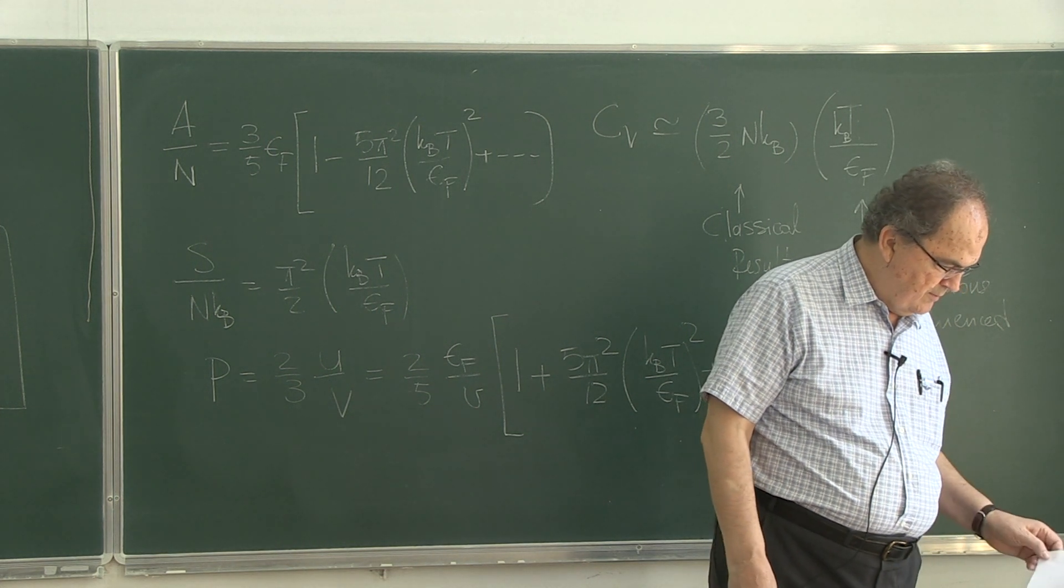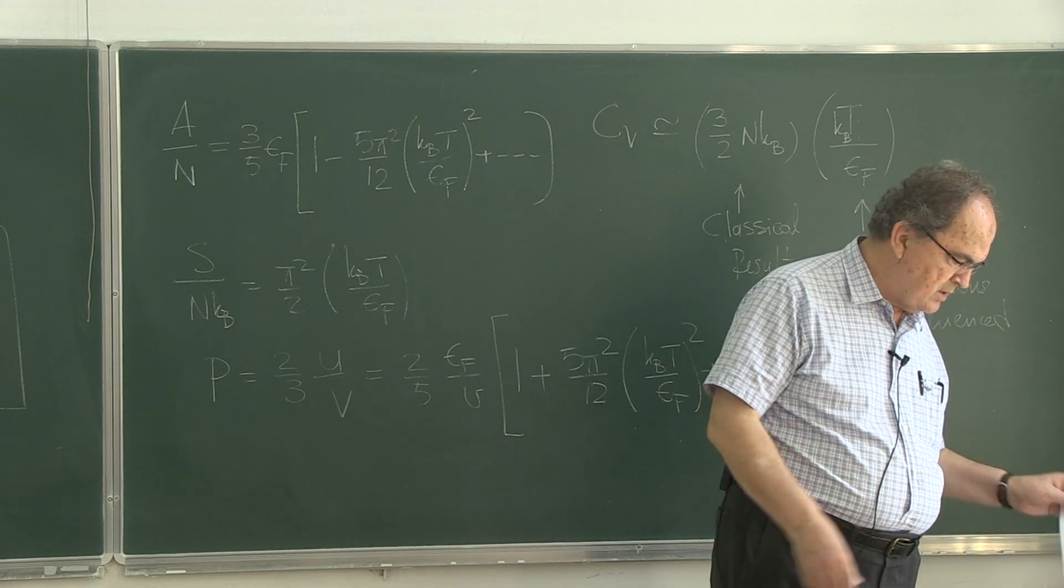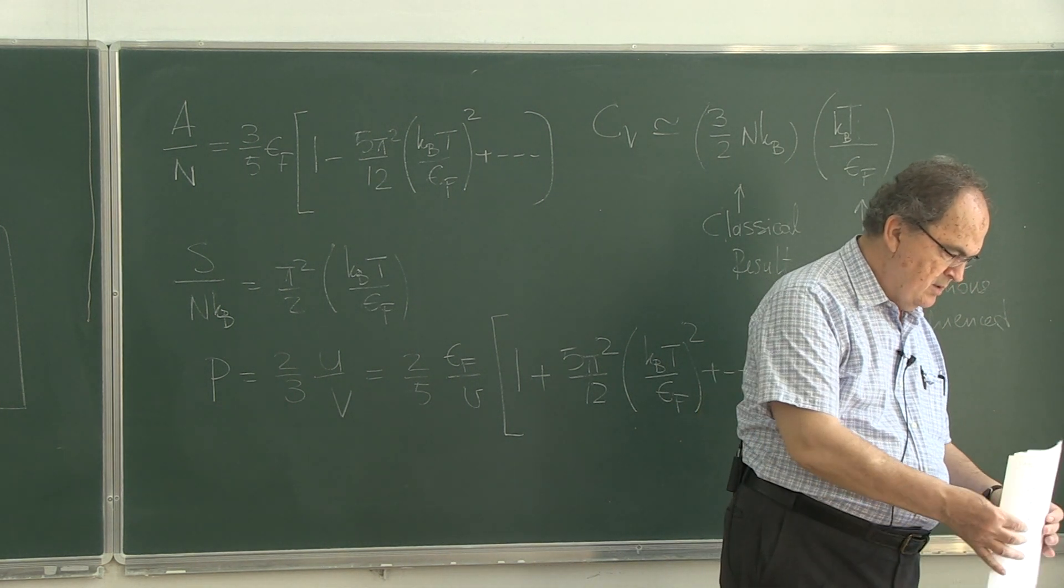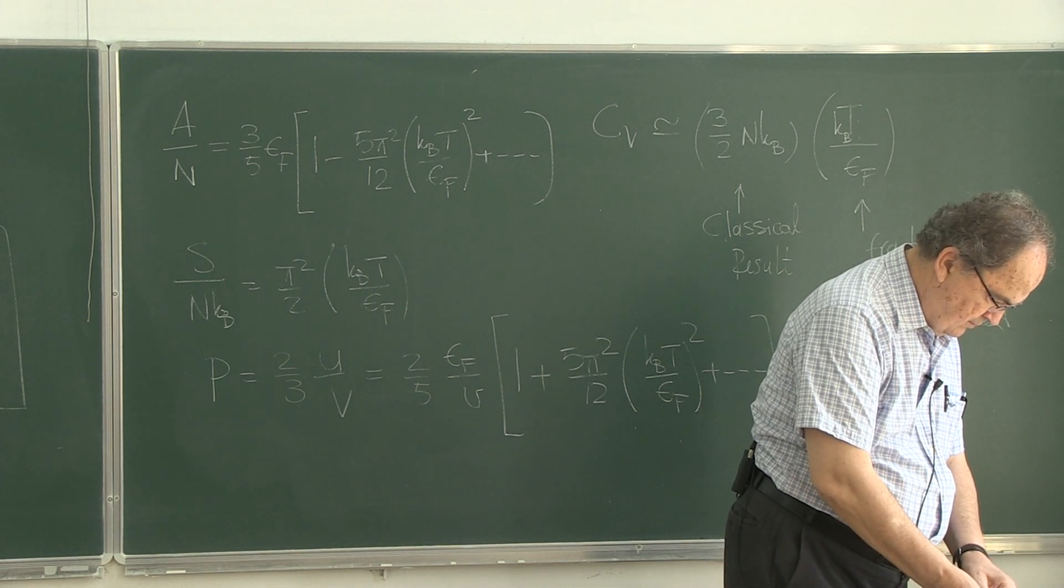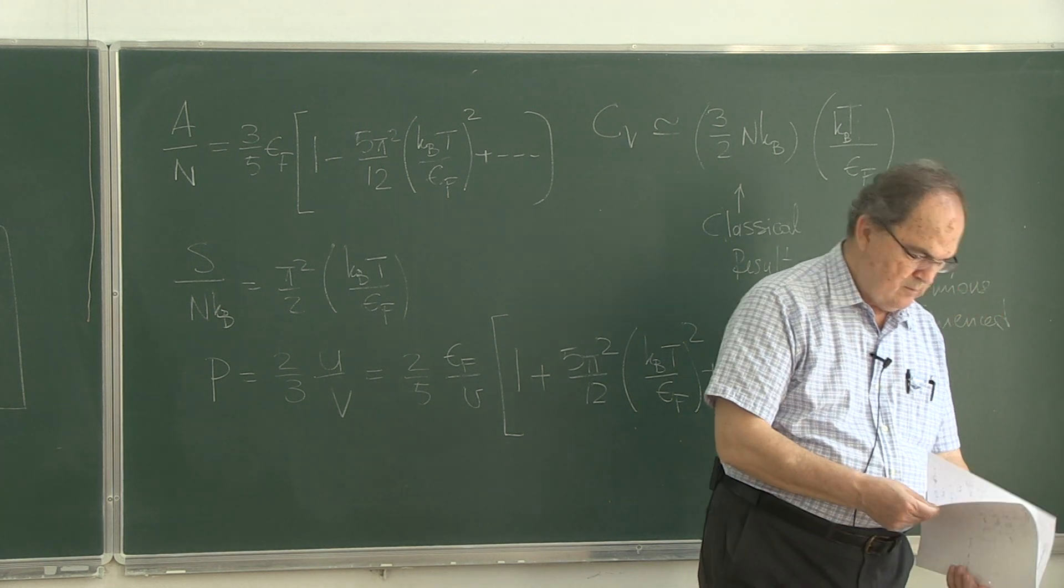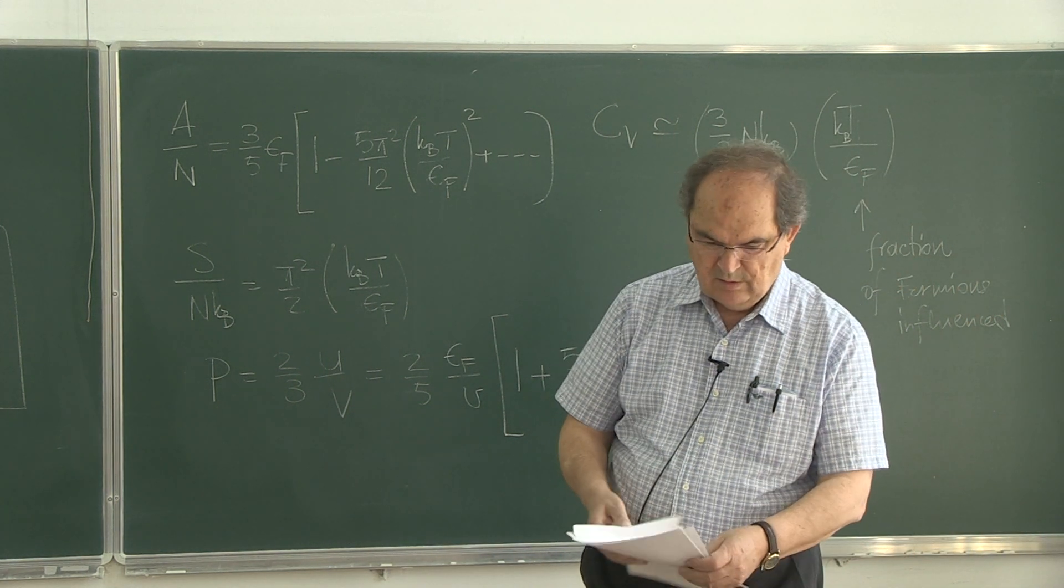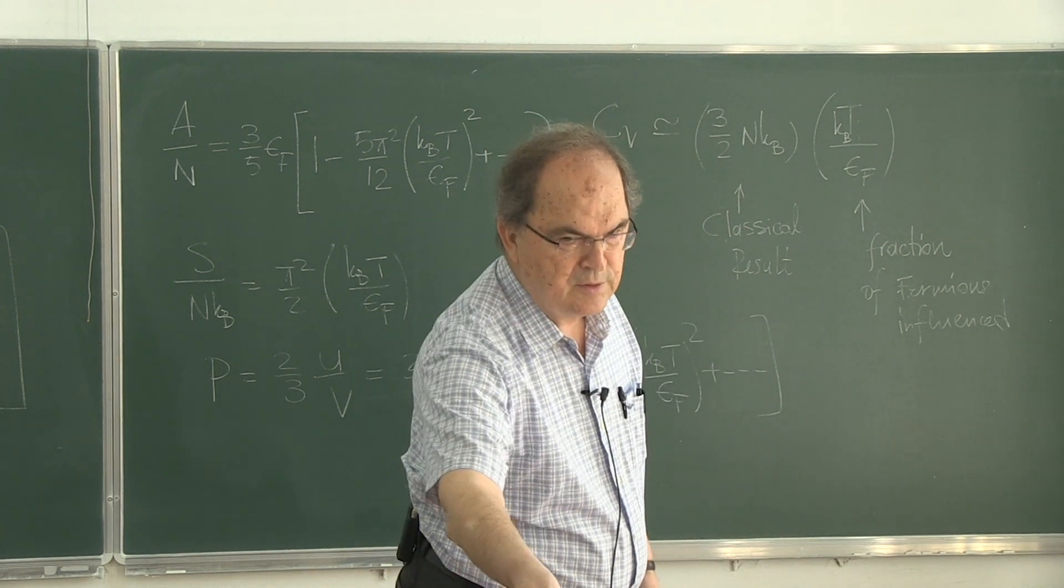High momentum states for fermions have more particles than in the classical case. This low temperature limit is extremely important. So, here are the explicit derivations of these results.